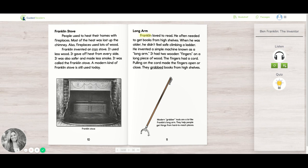Long Arm. Franklin loved to read. He often needed to get books from high shelves. When he was older, he didn't feel safe climbing a ladder. He invented a simple machine known as a long arm.